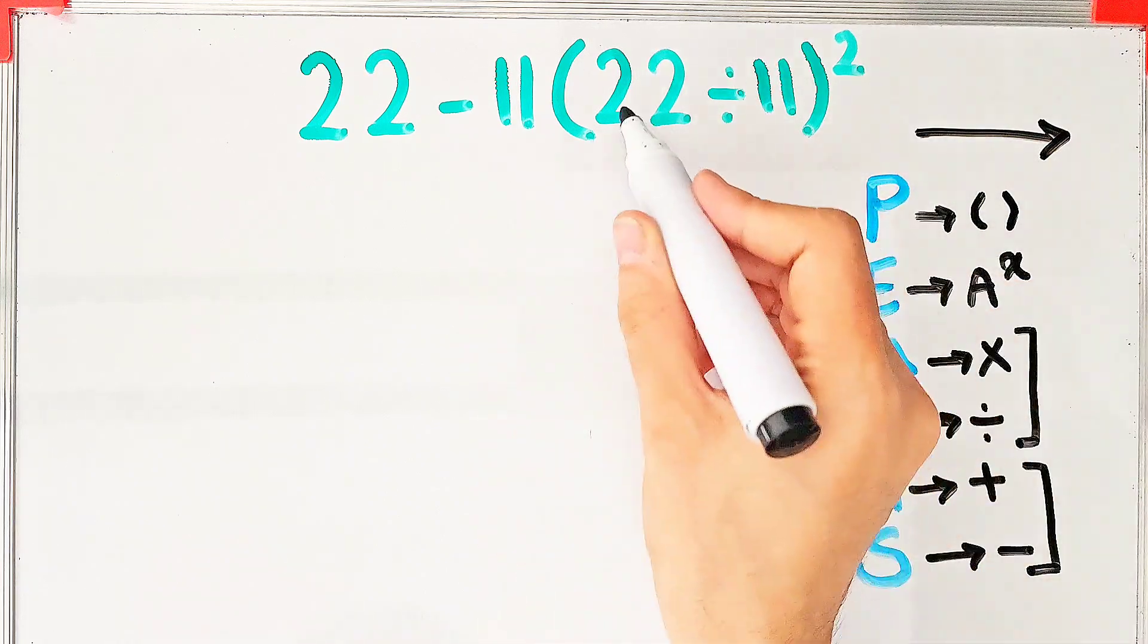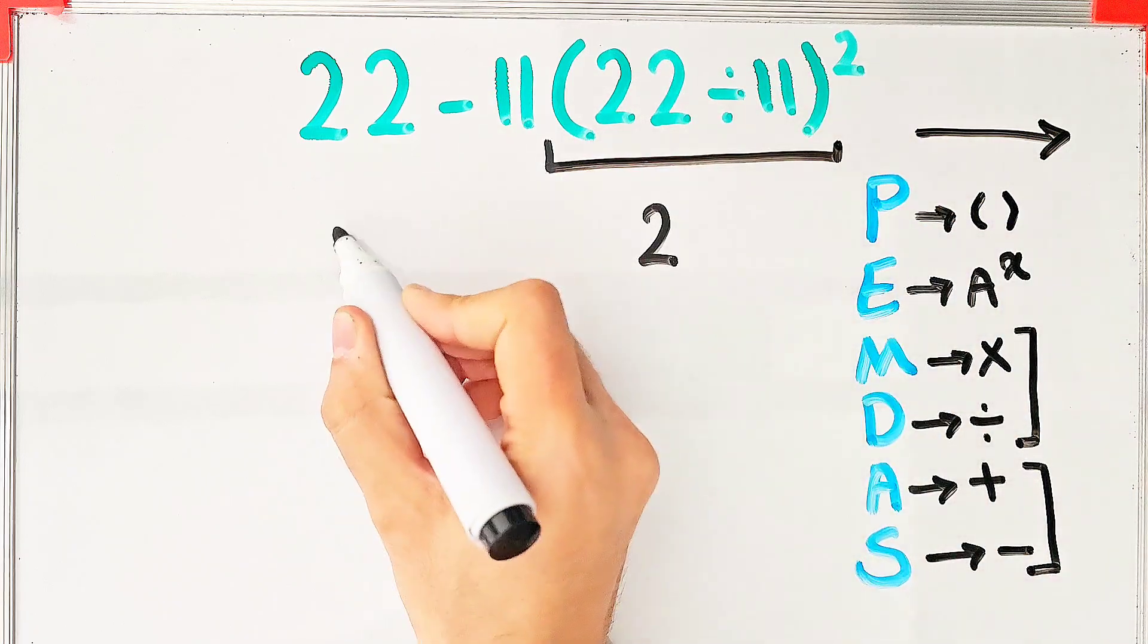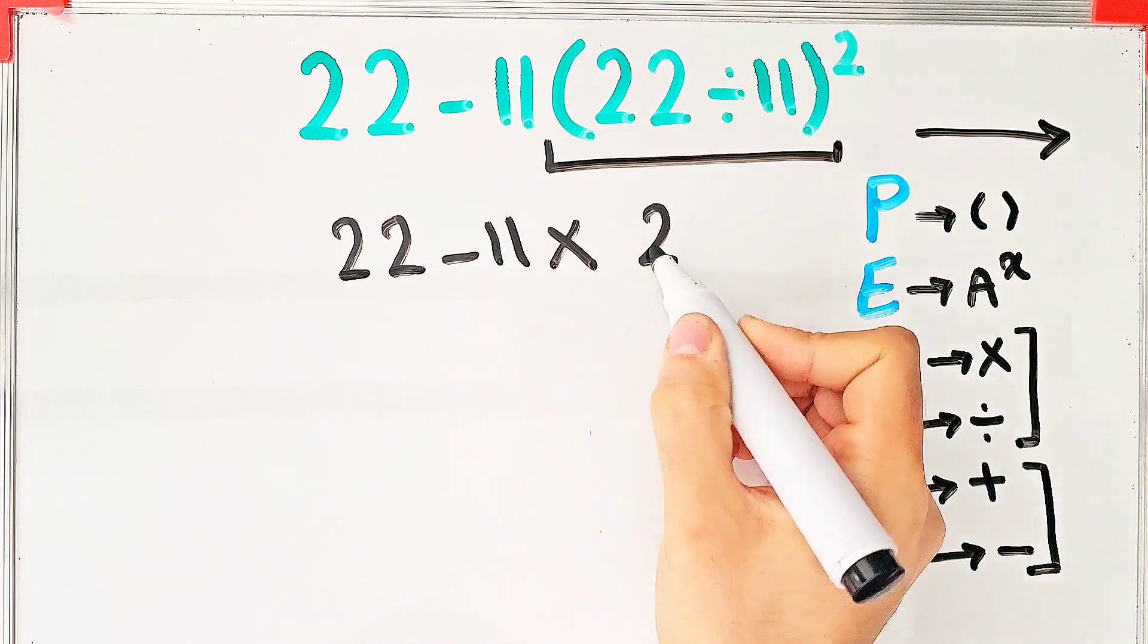According to the PEMDAS rule, first we simplify these parentheses. 22 divided by 11 equals 2. Now we have 22 minus 11 times 2 to the power of 2.